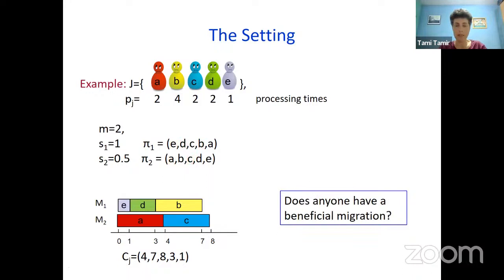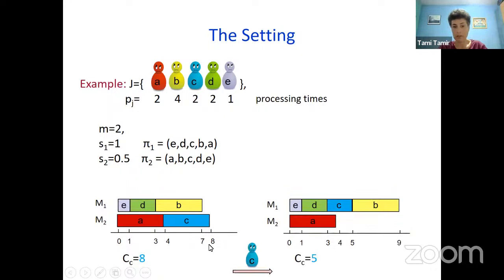Now we refer to the game. Given a possible schedule, we can ask whether anyone has a beneficial migration — is there a job that would benefit from changing machines? Here, for example, job C has a beneficial migration. Currently its completion time is 8; by migrating to machine 1 and looking at its priority list, job C would be assigned before job B, reducing its completion time from 8 to 5.